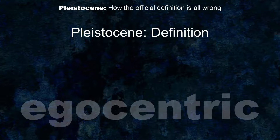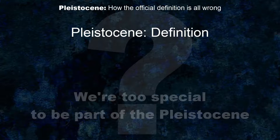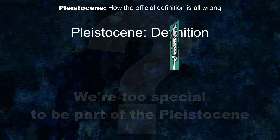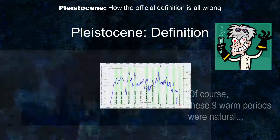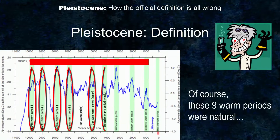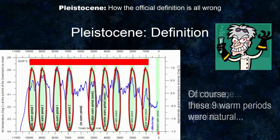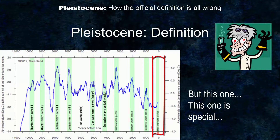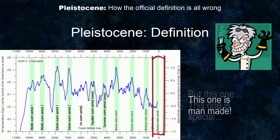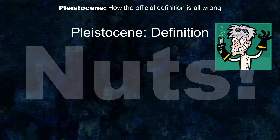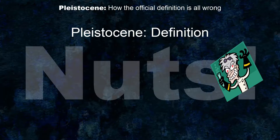That's ecocentric — the same delusion that had people thinking the Earth was the center of the universe. It's the same kind of insanity that has people thinking these warm periods were natural, but this one — this one is special, this one is man-made. Really? Are you crazy? Are you nuts?